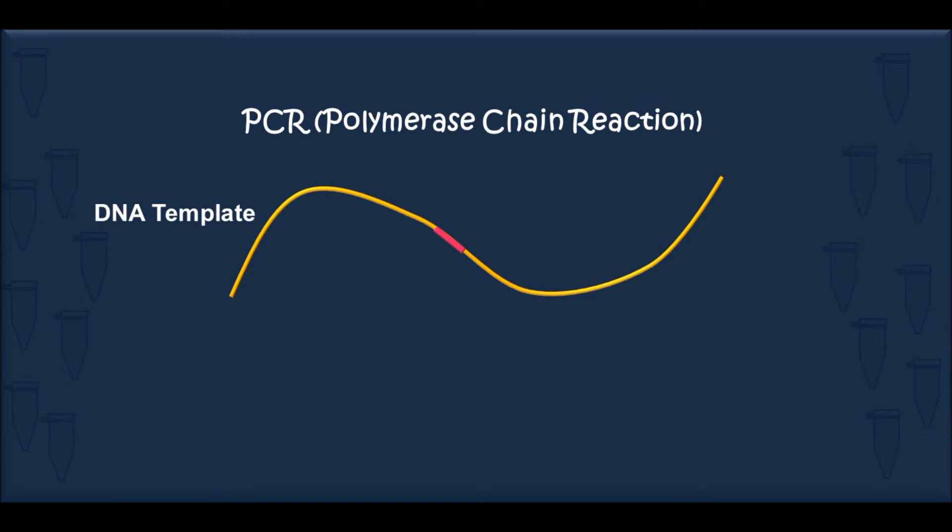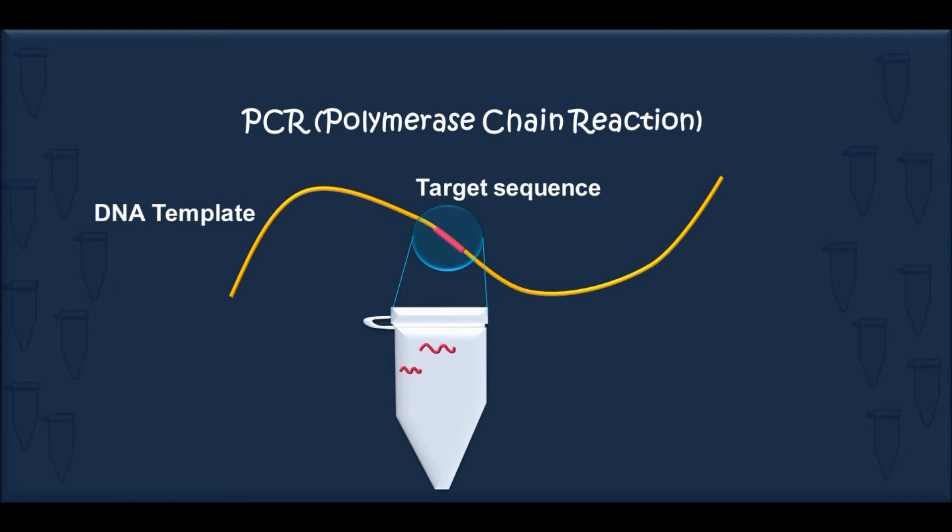Polymerase chain reaction is a lab technique used by researchers to amplify a specific DNA region into multiple copies. In this lecture, we are going to explain the PCR amplification process in detail.